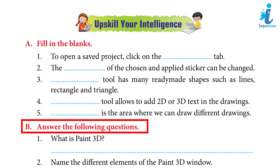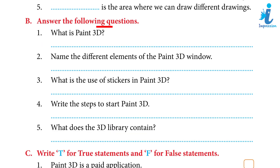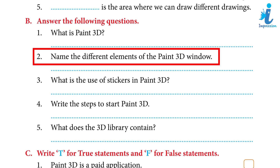Answer the following questions. 1. What is Paint 3D? Answer: Paint 3D is a free application with the addition of creating and editing 3D images in a Paint program. 2. Name the different elements of the Paint 3D window. Answer: The Paint 3D window has elements like Menu, Brushes, 2D Shapes, 3D Shapes, Stickers, Text, 3D Library, and Canvas.